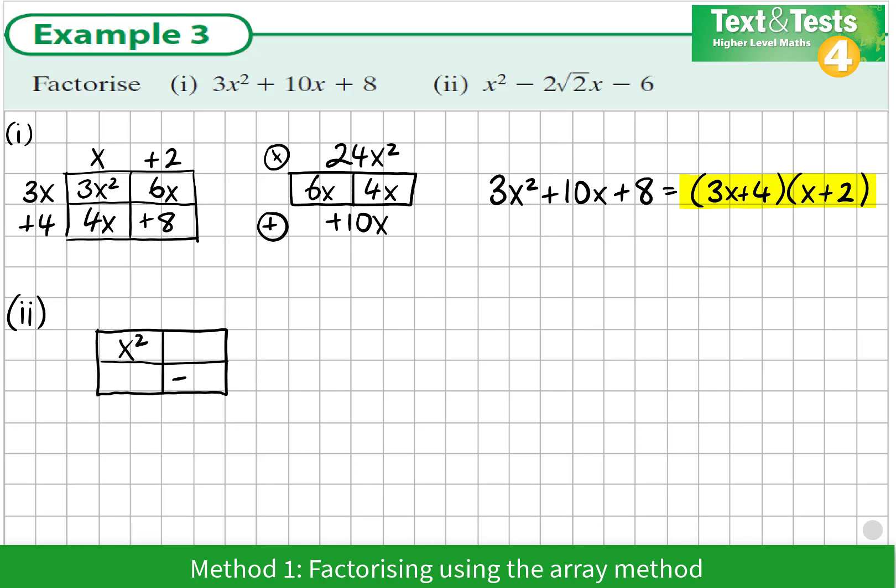We know from experience the x² goes in the first box and the -6 in the opposite corner. When we multiply this diagonal we get -6x². The other diagonal must multiply to the same total. We also know that we want the missing diagonal to sum up to -2√2x.